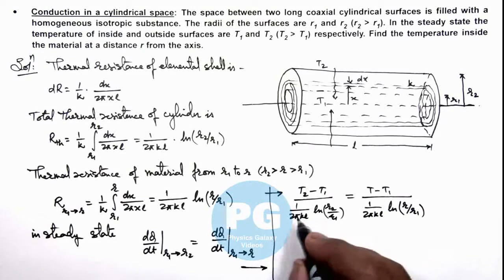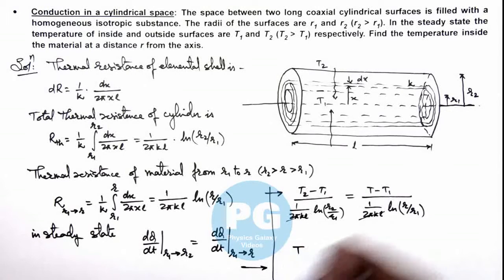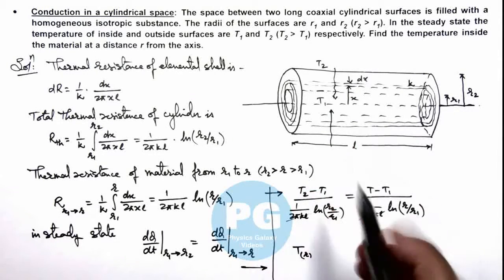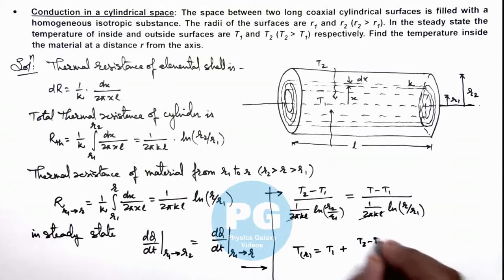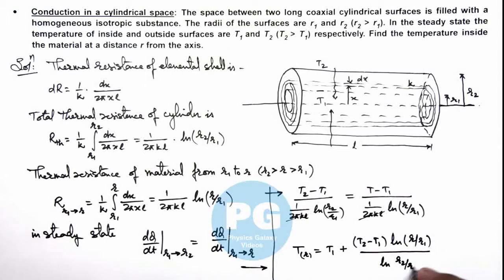The 2π k l terms cancel out, and on simplifying we get the value of temperature as a function of distance r from the axis: t = t1 + (t2 - t1) * ln(r/r1) / ln(r2/r1). This is the final result of this problem.